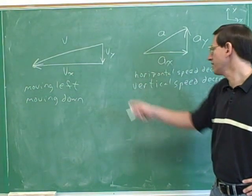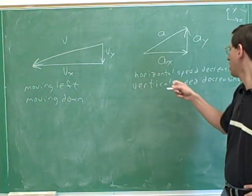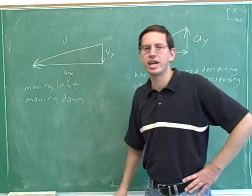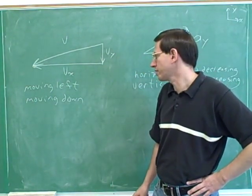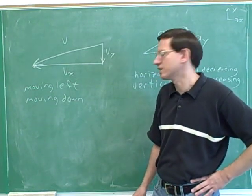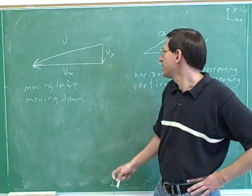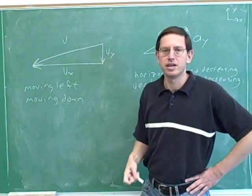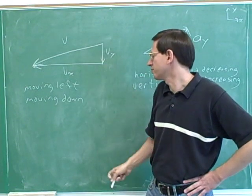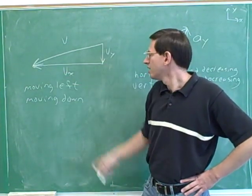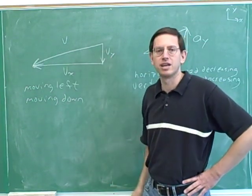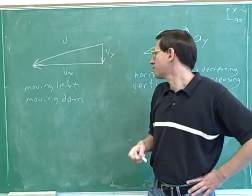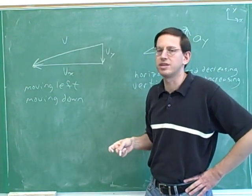So we have an object that is moving to the left with decreasing speed and moving down also with decreasing speed. One more thing we can say about this object: we know it's moving left and moving down, but which of those two components is it moving faster in? Is it moving more quickly horizontally or vertically? We can see that from our picture — the vertical velocity seems to be shorter than the horizontal velocity. Remember that the length of this arrow is the speed, so from looking at the picture we can see we have a lot more horizontal speed than vertical speed. It's perfectly legitimate to compare the horizontal and vertical components of the same vector because they are both in the same units.